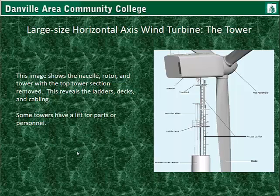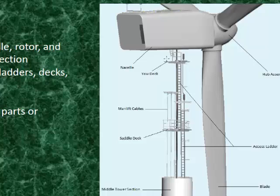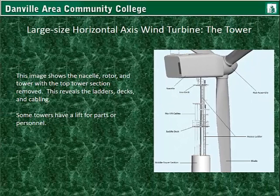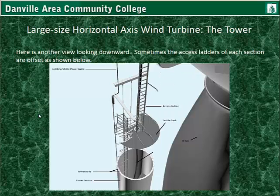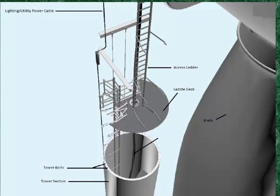This image shows the nacelle, rotor, and tower with the top tower section removed, revealing the ladders, decks, and cabling. Some towers have a lift for parts or personnel. The image shows man-lift cables, the yaw deck, the nacelle, the hub assembly at the front, access ladders, the blade, and the middle tower section. In this design the ladders are offset from one another, and there is a small ladder allowing you to climb from the yaw deck up into the nacelle.